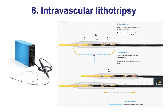Finally, there is the intravascular lithotripsy balloon. This balloon is not approved yet for coronary use in the U.S. — it is approved for peripheral use. This balloon emits high-frequency waves to the wall of the vessel, cracking the calcium. This is for circumferentially heavily calcified lesions, and by doing that, it can facilitate expansion of those heavily calcified lesions.